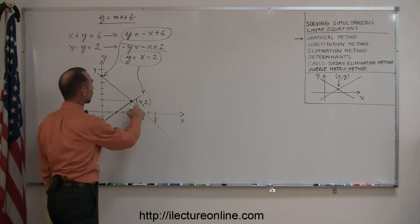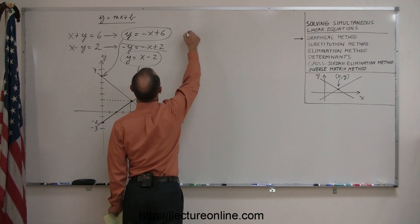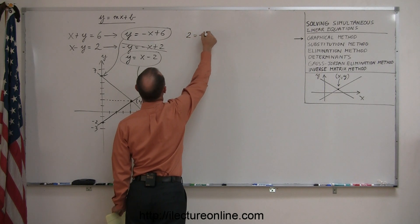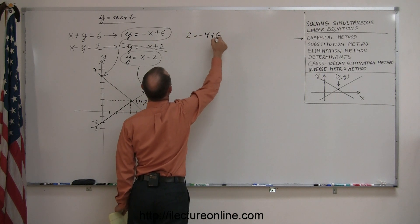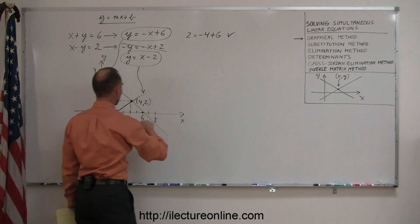If I plug in a 4 and a 2 into my first equation, so if I let y equal 2, x equal 4, I get 2 equals minus 4 plus 6, and minus 4 plus 6 is indeed 2, so that seems to work.